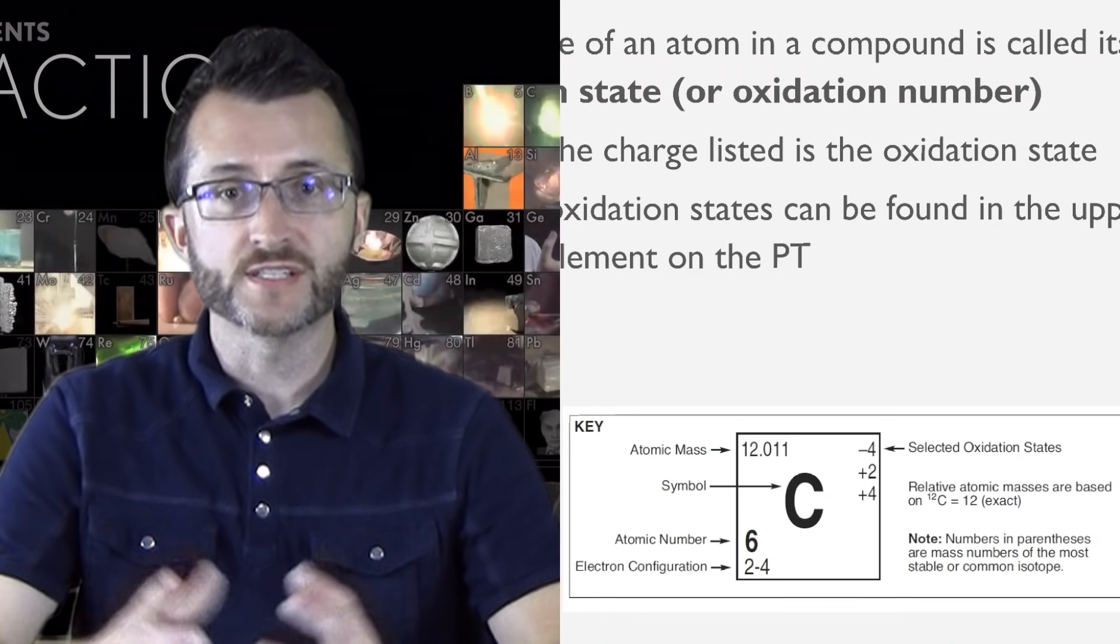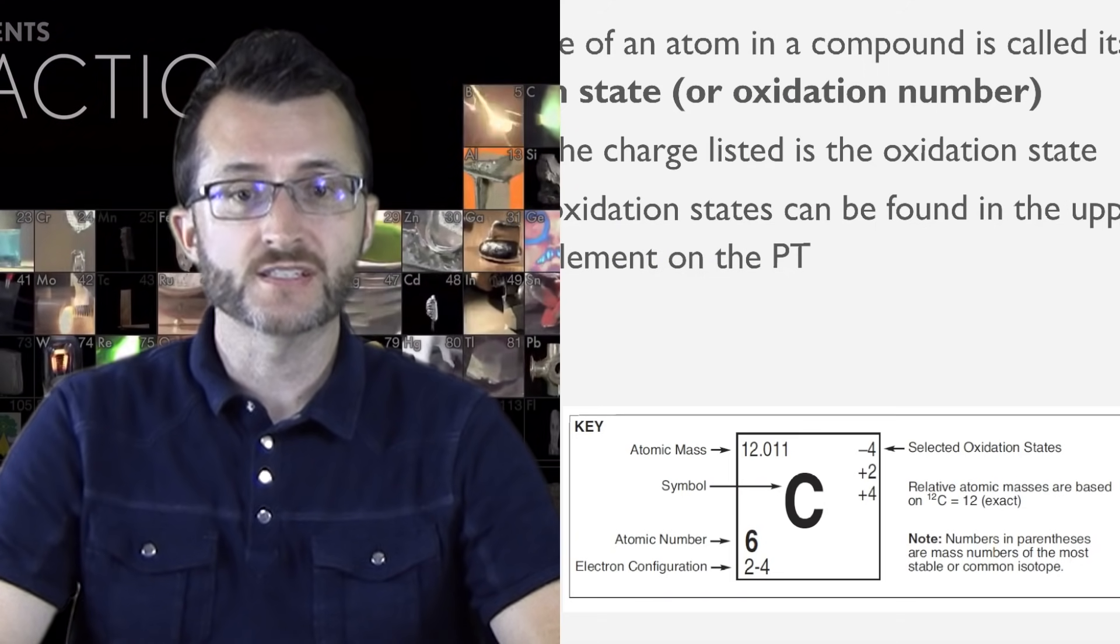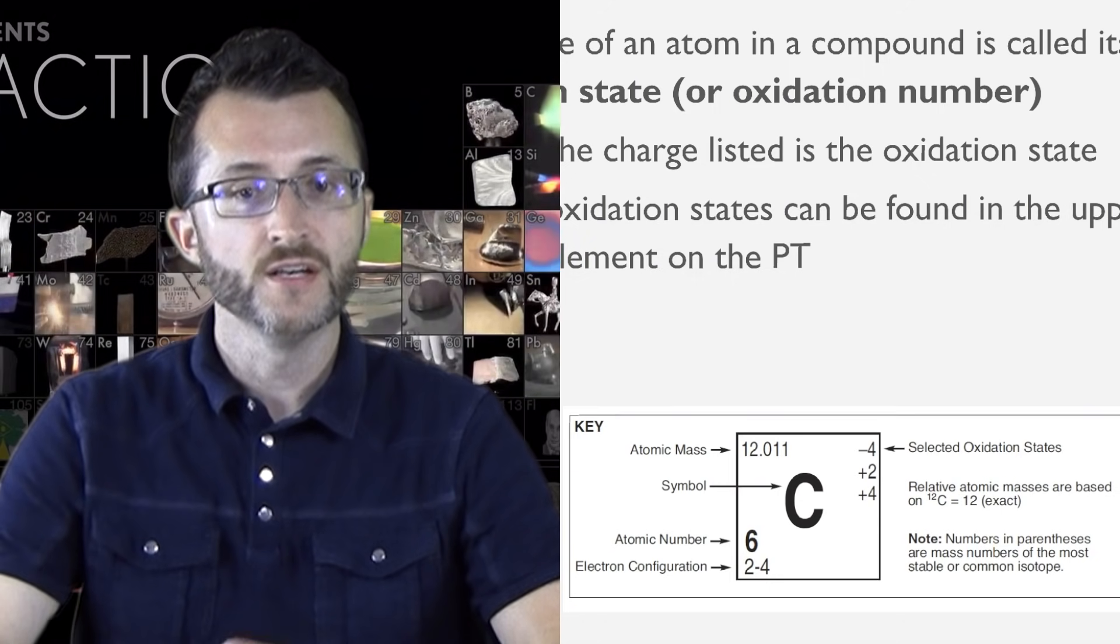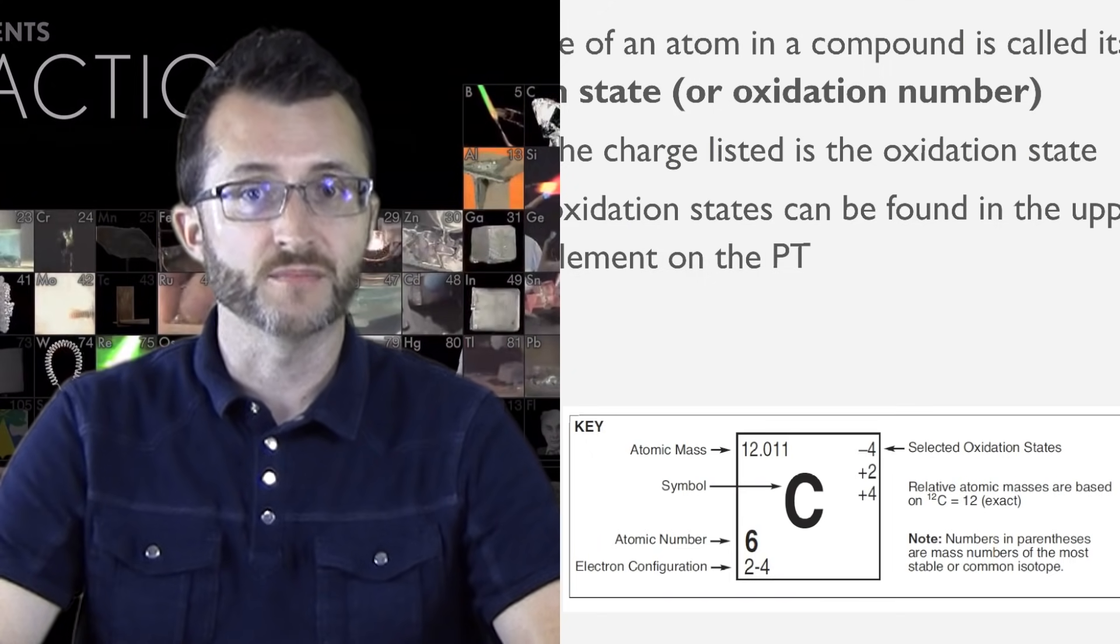Selected oxidation states can be found in the upper right for each element on the periodic table. So if we take a look at the key, which is the same key found in your periodic table, we see that the oxidation states of carbon can be negative 4, plus 2, or plus 4. Note that they are called selected oxidation states, so other oxidation states are possible.